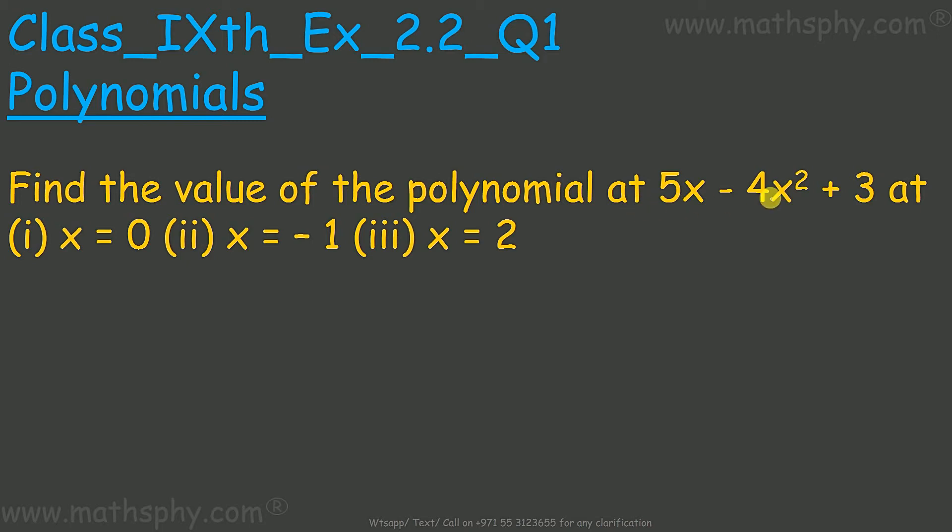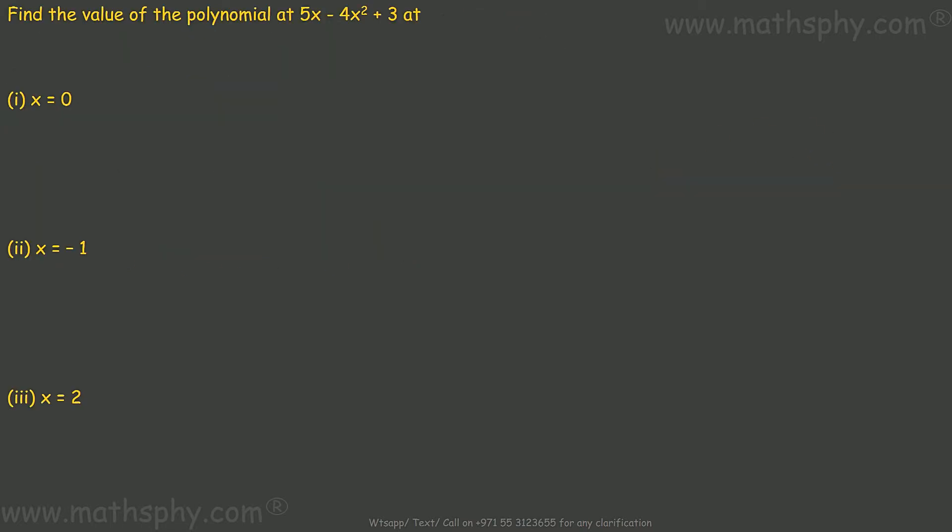This question here, we have this polynomial 5x minus 4x² plus 3 and we have x as 0, x as negative 1, and x as 2. We have to replace x with these values in this equation and find the values. Easy stuff.